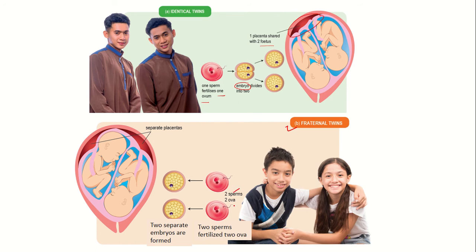Meanwhile, for fraternal twins, it comes from two different sperms and two ova. After fertilization, they form two separate embryos, and these two embryos will develop into two different fetuses, each with their own separate placenta.